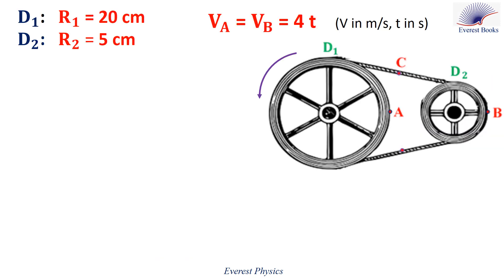Two sprocket wheels D1 and D2 are connected by a roller chain. The radius of D1 is R1 equals 20 cm, and the radius of D2 is R2 equals 5 cm. A and B are two points on the circumference of D1 and D2 respectively. These two points have the same speed, which is equal to 4T, V in meters per second, and T in seconds.